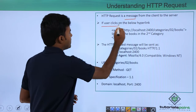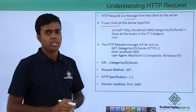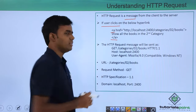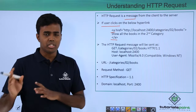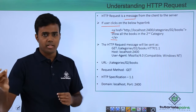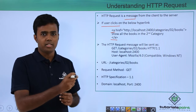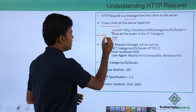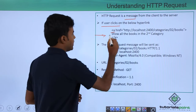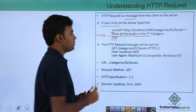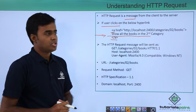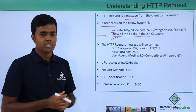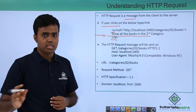Now, what happens when a user clicks on the below hyperlink? In the world of web, we have things called hyperlinks, where documents are connected to each other in the form of a hyperlink. Clicking one hyperlink leads you to another document. So suppose the user is at your home page and clicks a link saying 'show all the books in the second category' — underneath, an HTTP request message gets sent from the client to the server.